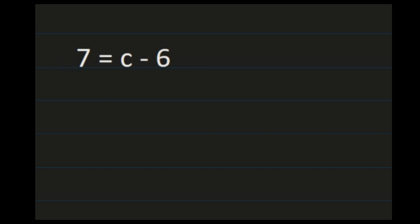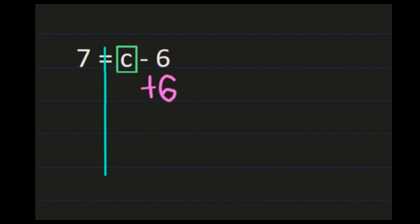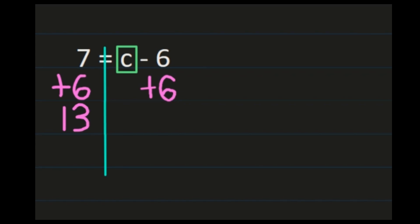For our final example, we have 7 equals c minus 6. Even with subtraction, the variable part of your equation can end up on the right side — it doesn't matter, your steps are the same. You may want to put the box around the c and draw the line so that you can see what you're doing on the left-hand side and on the right side. We're going to start on the right-hand side because that's where our variable is — c minus 6. We want to get c all by itself, which means we're going to need to add 6. If I add 6 to the right, because that's my inverse to subtracting 6, then I also need to add 6 to the left. Whatever I do on the right, I have to do on the left. So I get 7 plus 6 is 13, and I have minus 6 plus 6, which is plus 0.